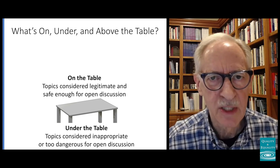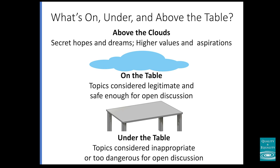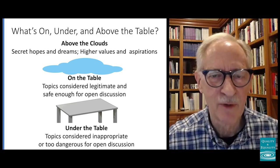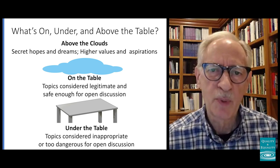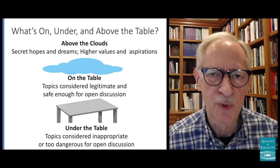The third zone is what's above the clouds — above the table — and that's the place for hidden hopes and dreams, people's higher values and ideals. Again, these are not put on the table because they're considered too good to be true or too idealistic. If somebody puts something like that up — 'Can't we be all we can be?' — everybody looks at them with a smirk and says, 'Come on, get real. What are you smoking? Get grounded. Let's be real here. This is a business.' And so people learn that that's not a topic to be raised in the group or organization.